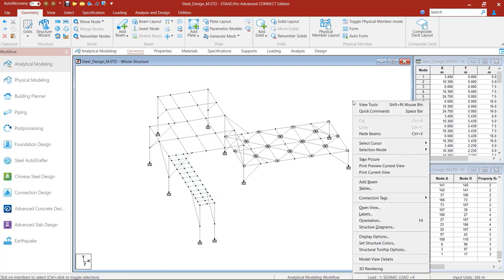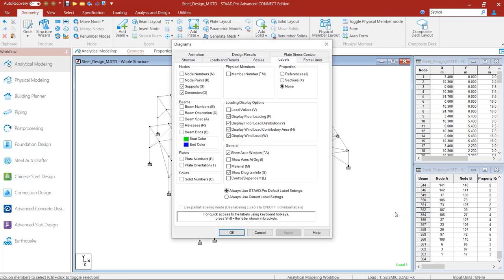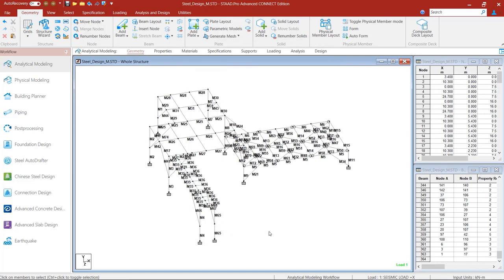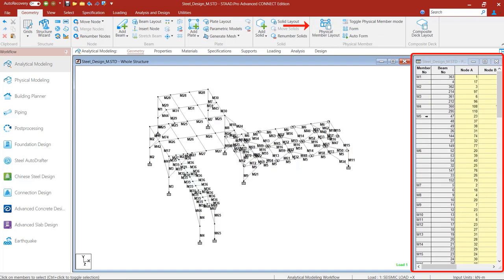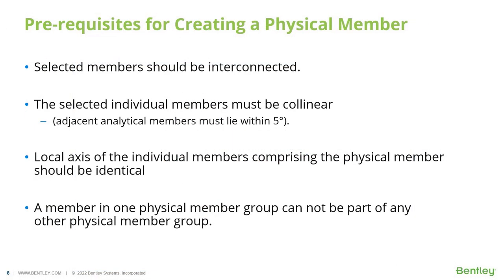The member number for physical members can be displayed by going into the label settings and checking member number. You can also go to the physical member layout to view, select, and delete your physical members if required. The requirements for creating a physical member from selected analytical members dictate that the analytical members be interconnected, the selected individual members must be co-linear, the local axis of the individual members comprising the physical member should be identical, and a member in one physical member group cannot be part of any other physical member group.